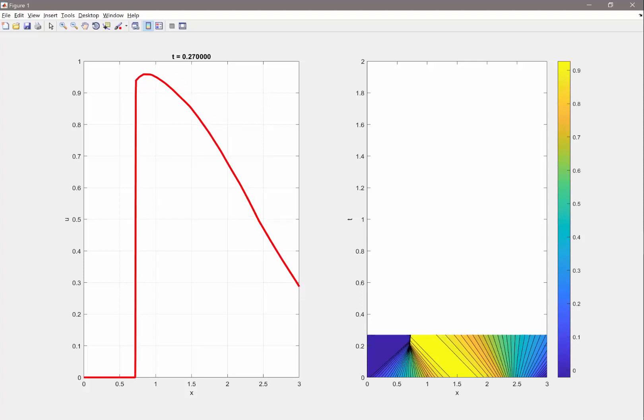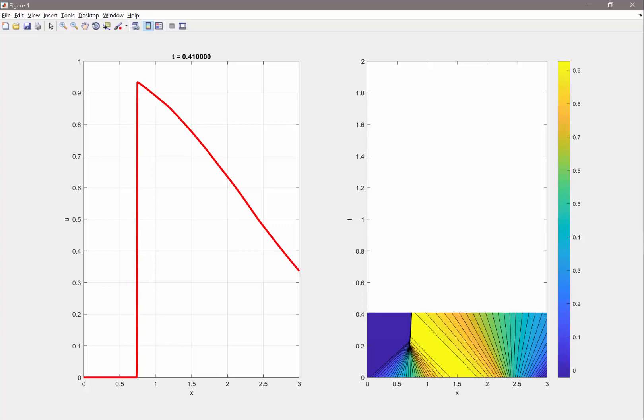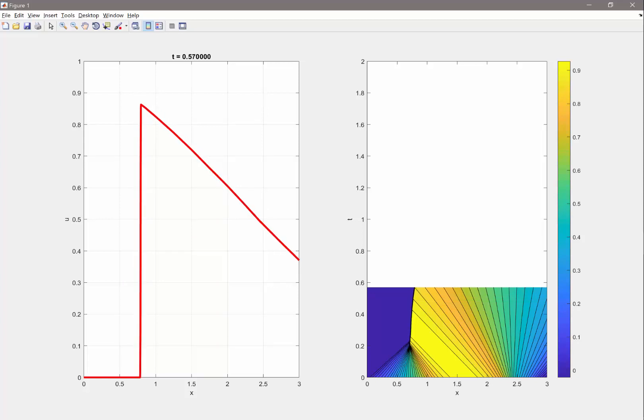As a result, you see a discontinuity form over here, where the discontinuity, as opposed to Burgers equation where the shock wave is always a high solution on the left and a low solution on the right, it's the opposite. We have low solution on the left, high solution on the right. So this is because of the concave behavior of the flux function.